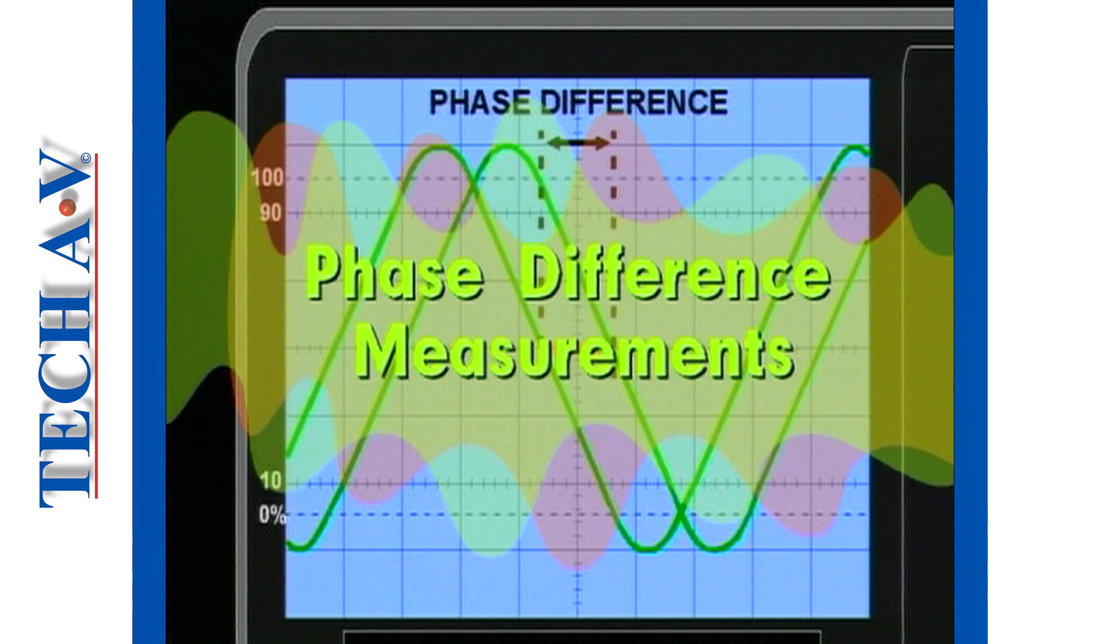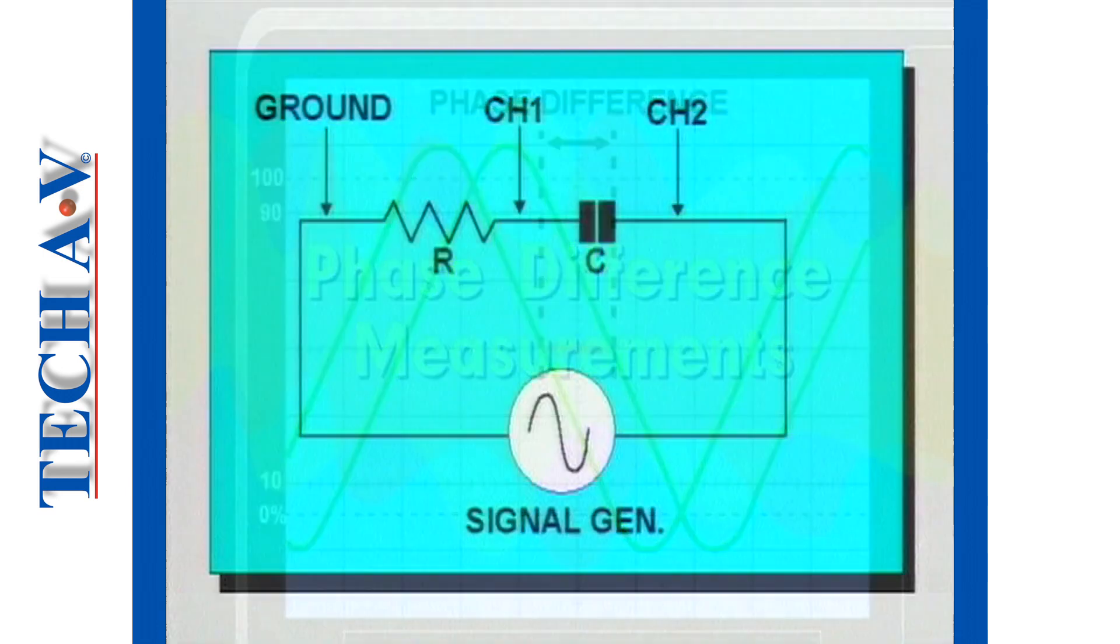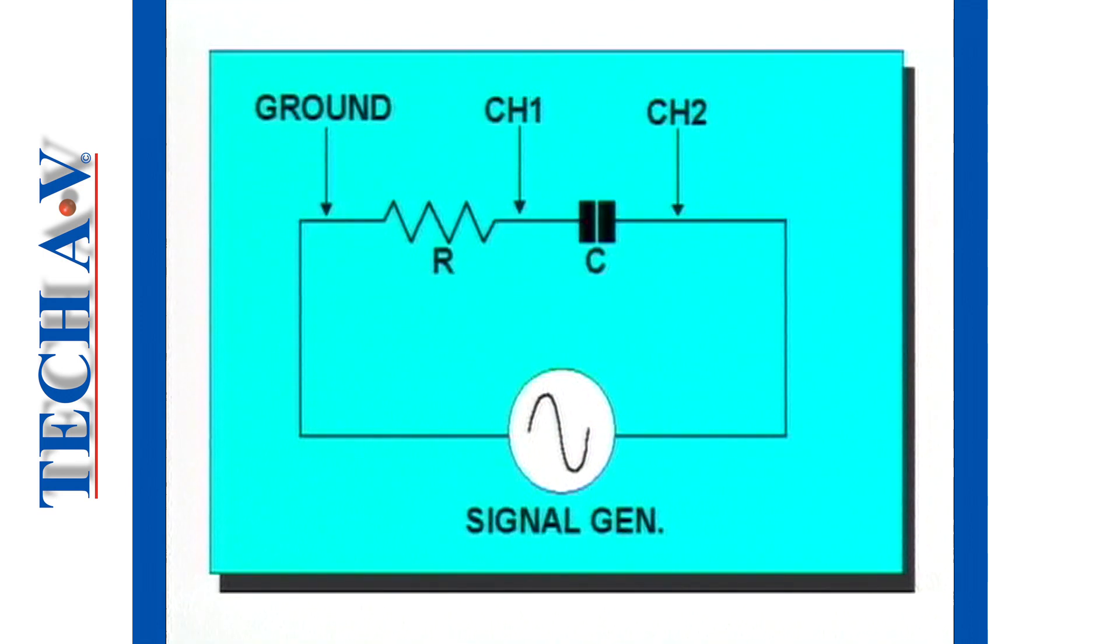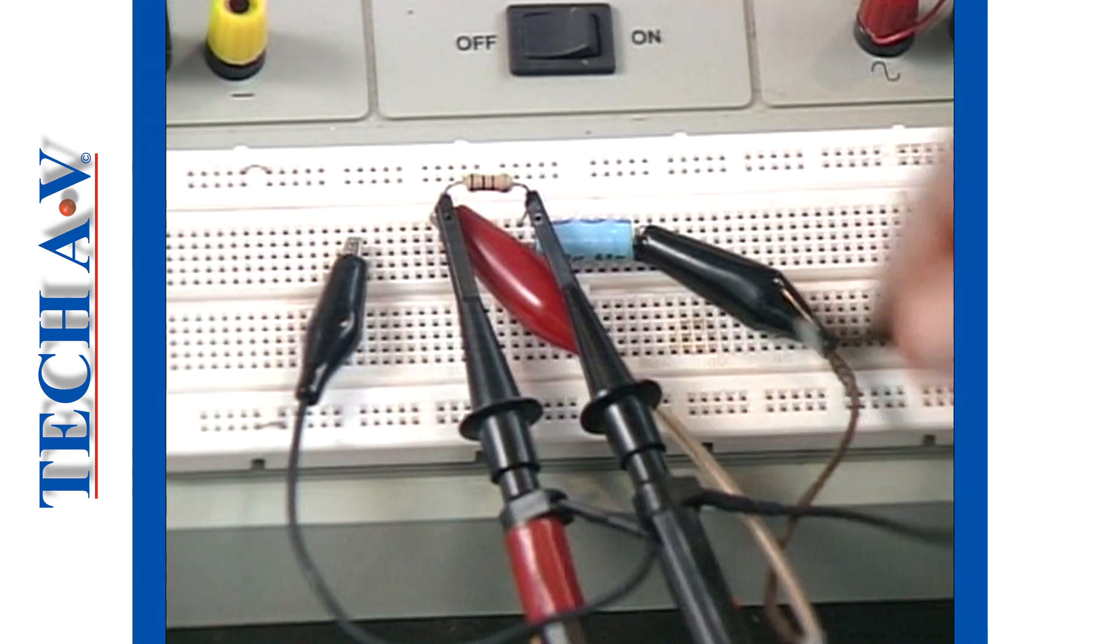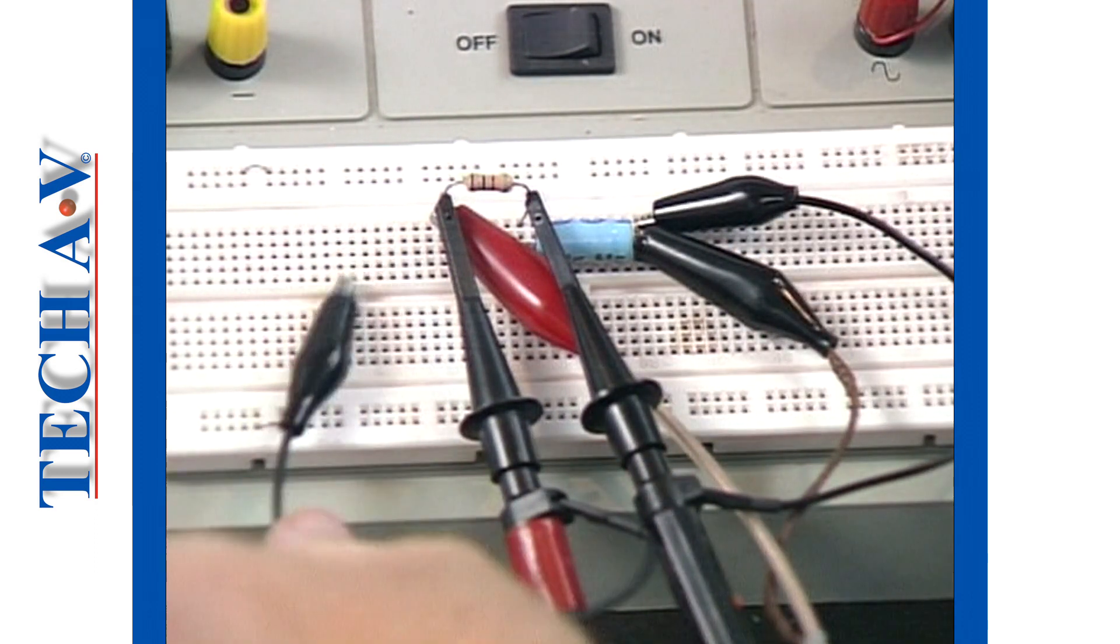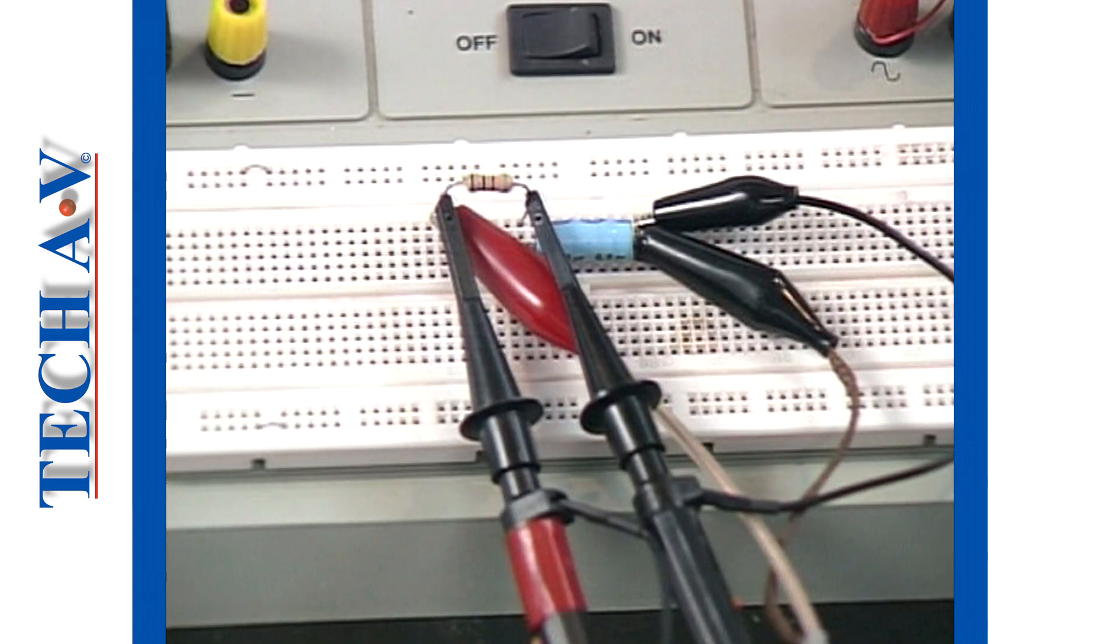Welcome back as we explain two methods of measuring the phase difference between two signals of the same frequency. Let's work through the measurement procedure using this simple resistor and capacitor circuit. Note that we only make one probe earth connection to the circuit. We'll explain the reason for this later.